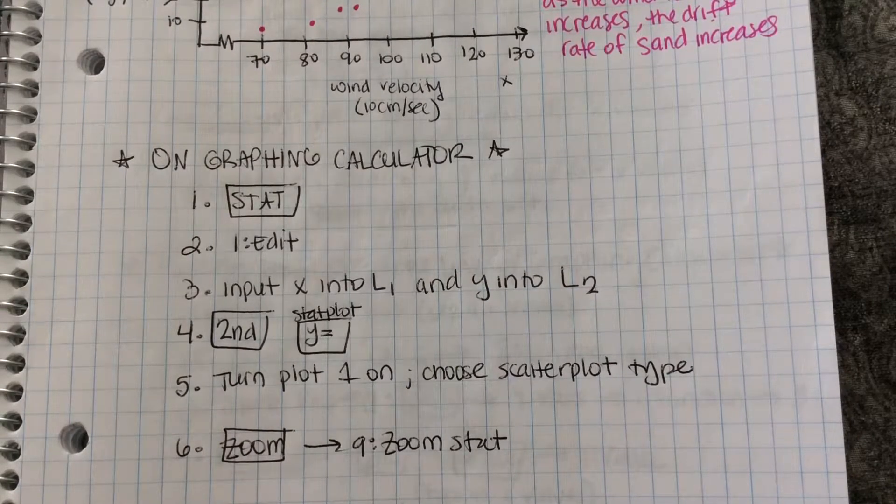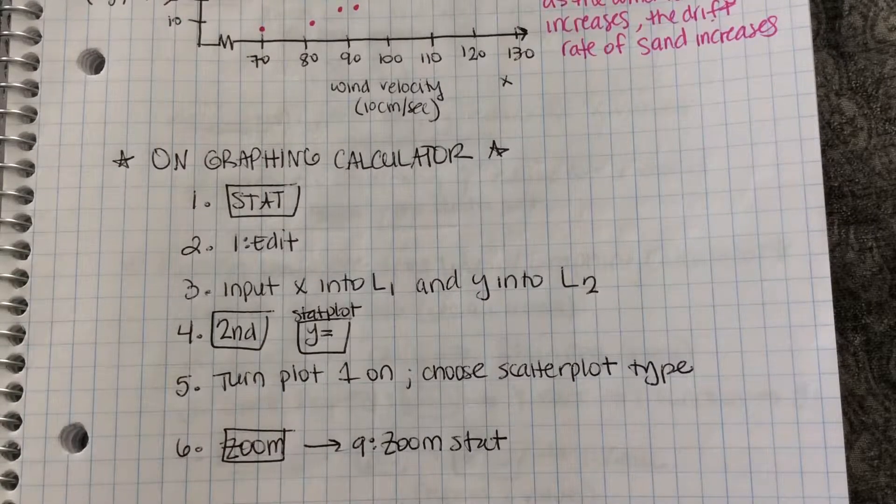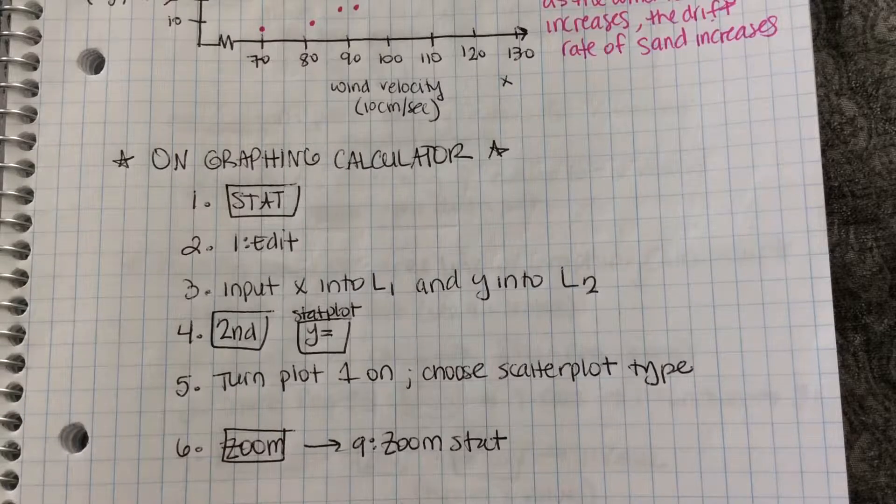Then I'll press 2nd, STATPLOT, which is over Y equals, to turn on plot 1 and choose the scatter plot type.